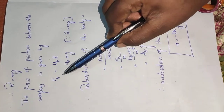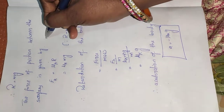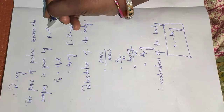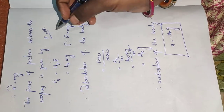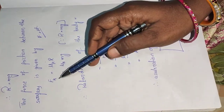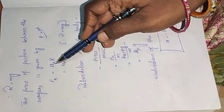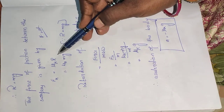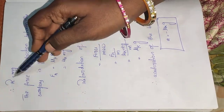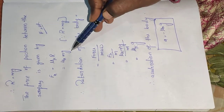So the force formula is F equal to Mu R — that is the coefficient of friction formula. Since this is kinetic friction, F suffix K equal to Mu suffix K into R. Now, what is R? R equal to MG. So by substitution, F_K = Mu_K into MG.